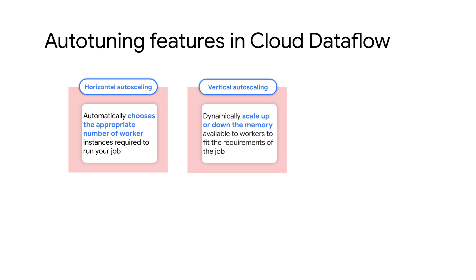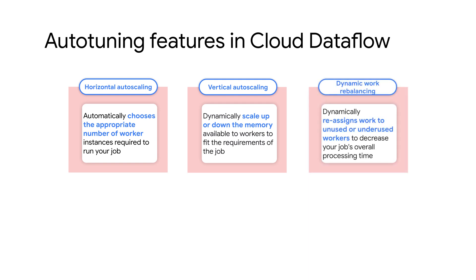Vertical auto scaling dynamically scales up or down the memory available to workers to fit the requirements of the job. This feature makes jobs resilient to out-of-memory errors and maximizes pipeline efficiency. Finally, dynamic work rebalancing dynamically assigns work to unused or underused workers to decrease your job's overall processing time.